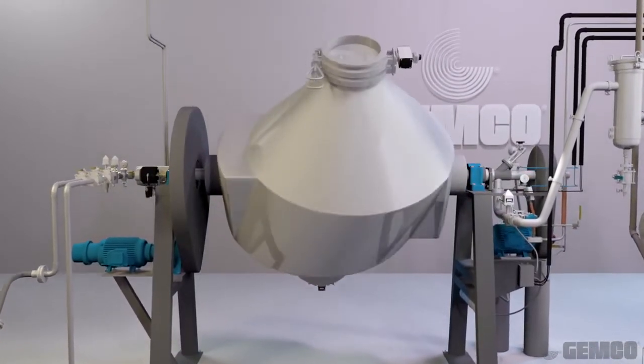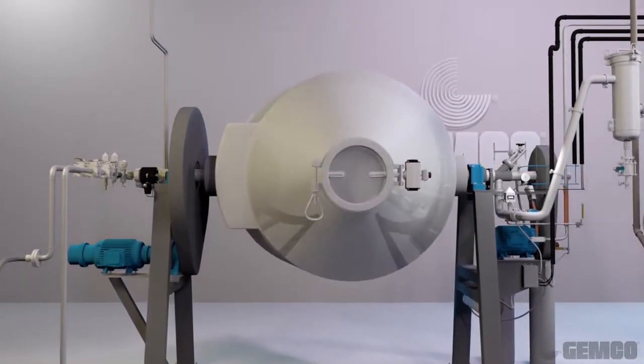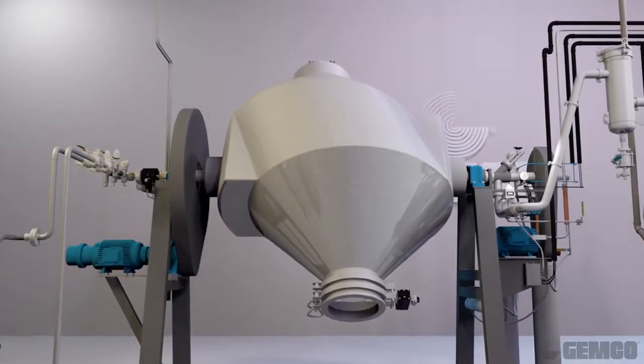Jemco's tumble blender shapes are engineered to create a repeatable pattern in which the entire bulk material moves to form a homogeneous mixture.